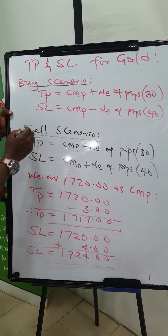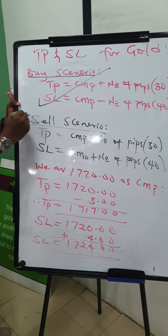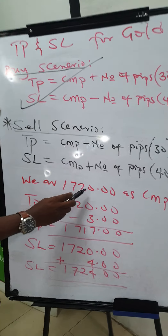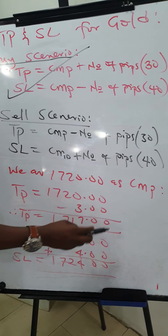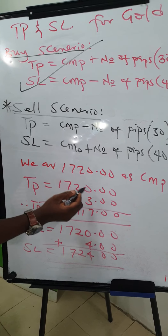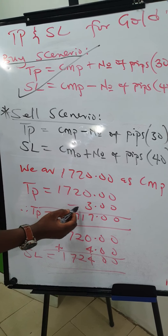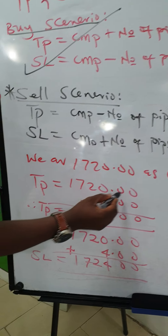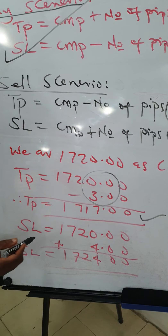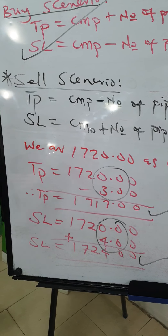For the sell scenario, we continue with 1720.00 as the current market price. The TP equals 1720.00 minus 30.00 — because in a sell scenario it is a minus. The stop loss equals 1720.00 plus 40.00. Note the positioning of the 30 and the 40 before the decimal point when you write them out, and those are the answers you get for your TP and stop loss.